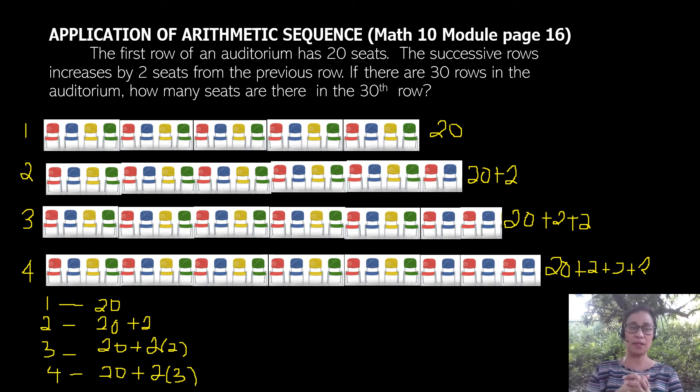Now there's already a pattern here that's quite obvious. We can actually say that the fifth row would have 20 plus 2 multiplied by 4. Now let's go back to the question of the problem.